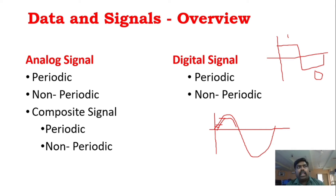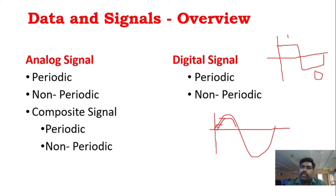As I said before, analog signal represents a continuous signal — a sine wave. And digital signal represents a square wave. Analog signal is continuous and digital signal is discrete.